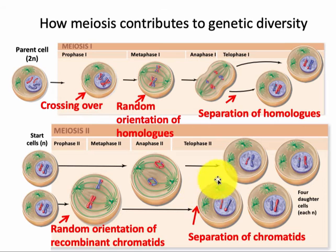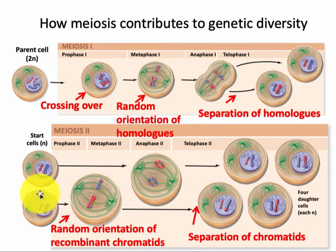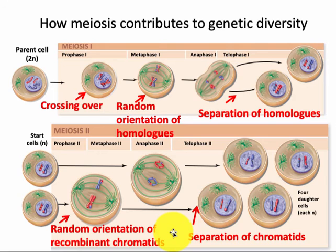Finally, the separation of the chromatids at the end of meiosis II results in complete haploid cells. In mitosis, sister chromatids also separated, but since they were identical, that separation did not result in any variation.